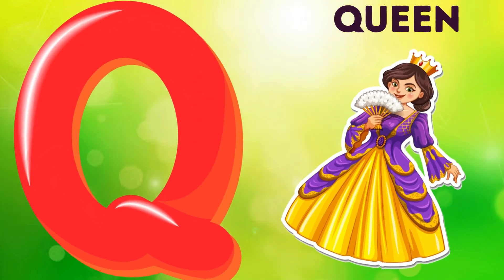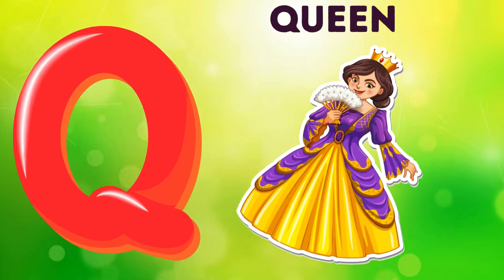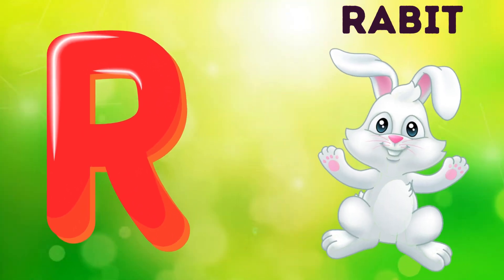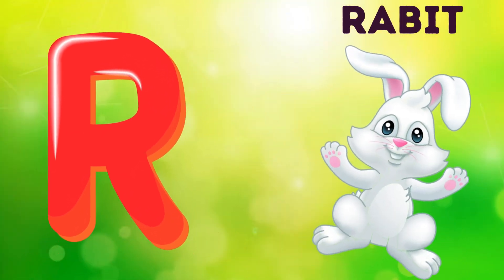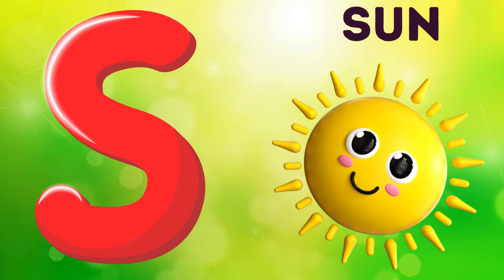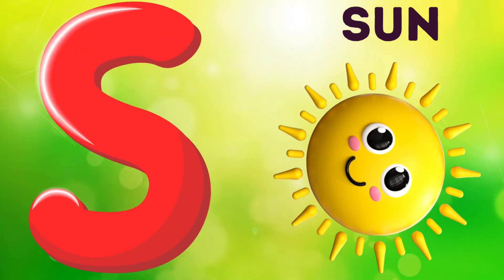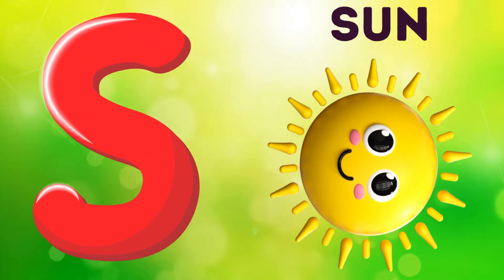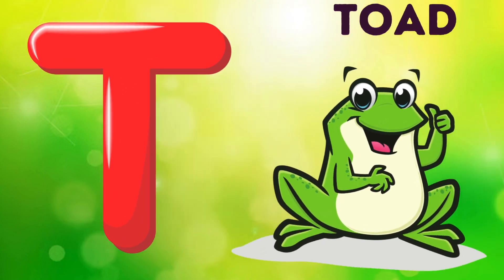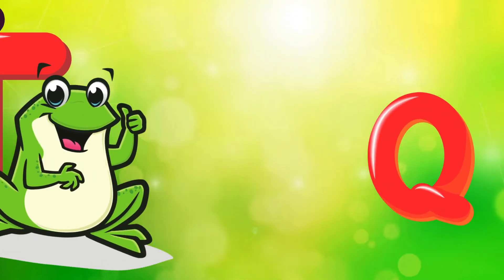Q is for queen, k-k-queen. R is for rabbit, r-r-rabbit. S is for sun, s-s-sun. T is for toad, t-t-toad.